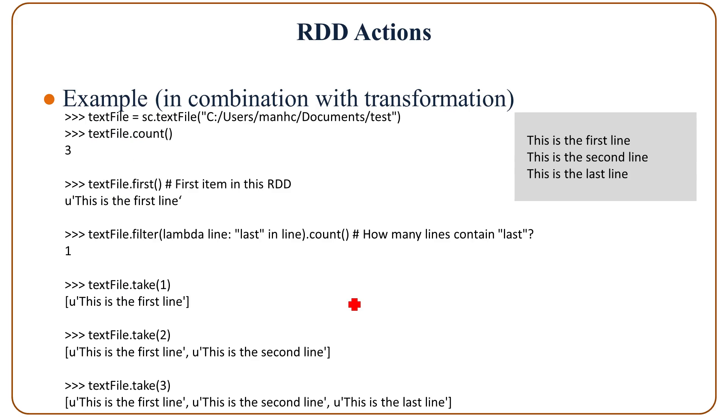Now look at some examples in combination with transformations. Now let's try an example. In this example we use a text file, namely test, in the local path, and we use the text file method of the Spark context object to create an RDD, namely textFile. And then we call the action method - so count is a method of textFile RDD, and this method is an action method to return the number of elements, basically the number of lines. So in the text file we have three lines like this, so the number of elements that is returned is three.